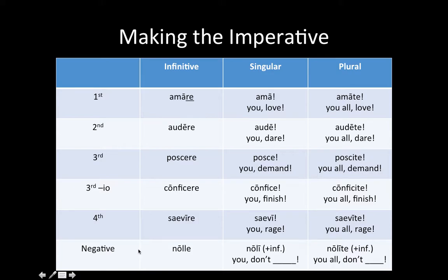In order to make a negative command — commanding somebody not to do something (not to stop doing something, but simply not to do it) — you take the verb 'to not want.' Its infinitive is 'nolle.' You drop the -le, because it's an irregular verb, and you get 'noli.' Literally it means 'don't want to [do whatever].' So you could say 'you don't love' or 'you don't run into the street.' Whatever you want to command the person not to do, you put it in the infinitive. To command more than one person, throw a -te on the end to get 'nolite,' and again put the action in the infinitive.